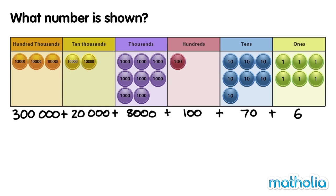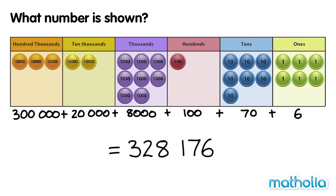Let's add the value of each place. 300,000 plus 20,000 plus 8,000 plus 100 plus 70 plus 6 equals 328,176. The number shown is 328,176.